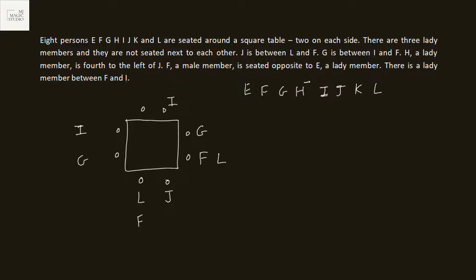H, a lady member, is fourth to the left of J — so counting four positions left from J, H is placed there. F is a male seated opposite E. Taking the inner arrangement, if F is sitting opposite H in the outer arrangement, we eliminate that option. F is seated opposite E.